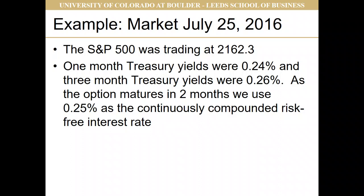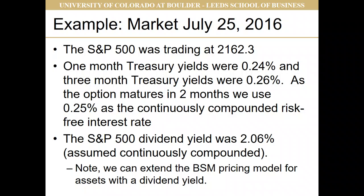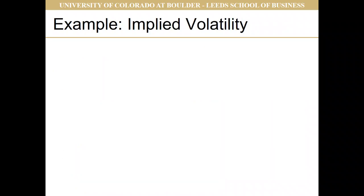Since the option matured in about two months, we're going to use 0.25% as the continuously compounded risk-free interest rate. For a longer-dated option, we would need to be more careful about the compounding convention for those rates, but since this option matures in two months, the compounding frequency doesn't really matter. Finally, the S&P 500 dividend yield was 2.06%, and we'll assume that's continuously compounded. Note that we've extended the Black-Scholes-Merton pricing model for assets with a dividend yield.